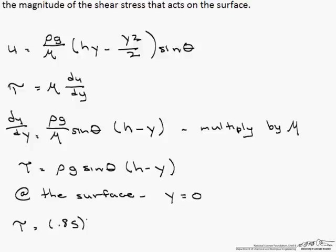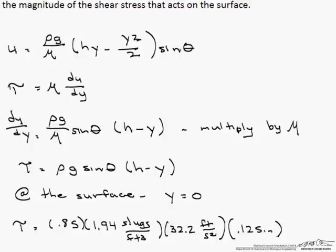So tau equals 0.85, the specific gravity, times 1.94 slugs per feet cubed, that's the density, times g, 32.2 feet per second squared, times h. Since our tau is just rho g sine theta times h, since y equals 0, and our h is 0.125 inches. And to make sure we're in the right units, we have that 1 foot equals 12 inches.